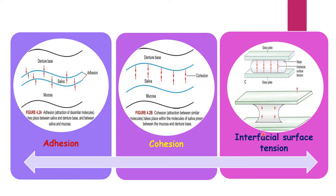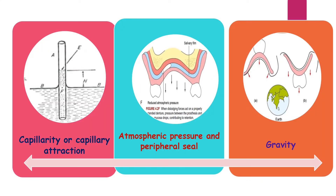The third factor is interfacial surface tension, defined as the tension or resistance to separation possessed by the film of liquid between two well-adapted surfaces. The fourth factor is capillarity or capillary attraction — the quality or state whereby, because of surface tension, it causes elevation or depression of the surface of a liquid that is in contact with a solid.